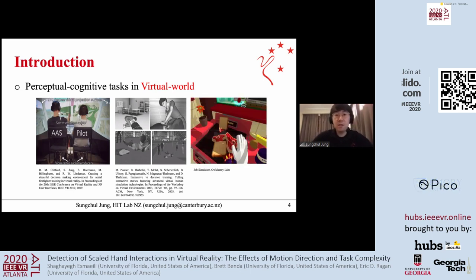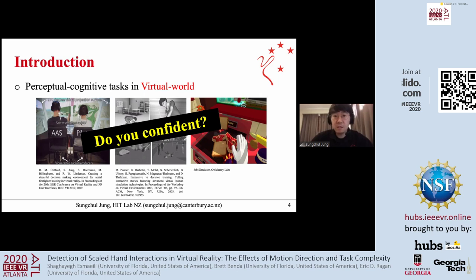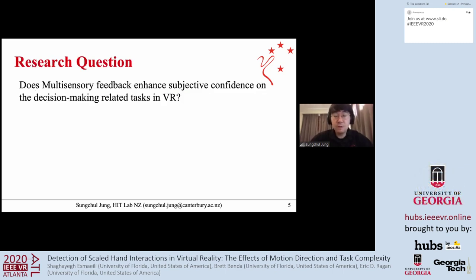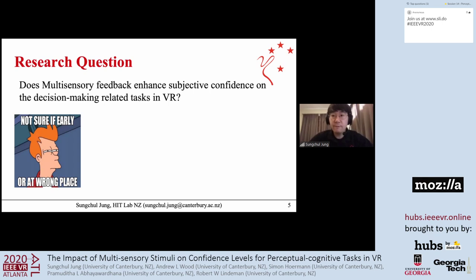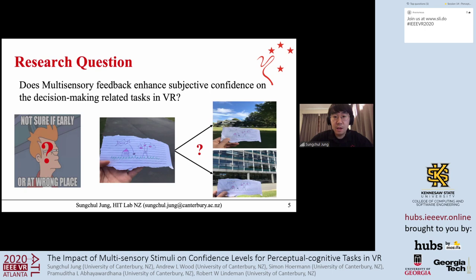Since most VR setups only provide vision, audio, or at best small tactile feedback, sensory feedback is missing compared to real-world experience. Our research question is: does multisensory feedback enhance subjective confidence in decision-making-related tasks in VR? To address this, we chose a location searching task since it requires vision, audio, tactile, and even smell depending on the location. For example, if you have an appointment to meet in front of a lemon tree near a house, the tree, house, and even smell can strongly inform the decision.